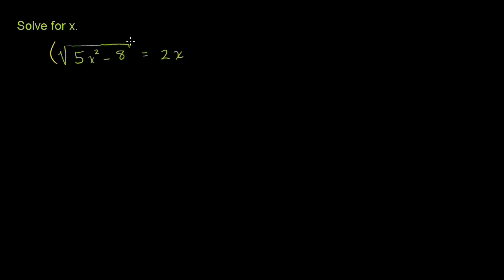So let's just square both sides of that equation. Now the left-hand side, if you square it, the square root of 5x² - 8 squared is going to be 5x² - 8. And then the right-hand side, 2x squared is the same thing as 2² times x², or 4x².